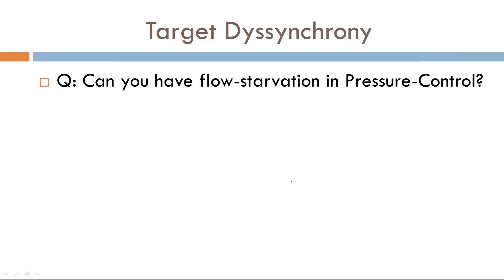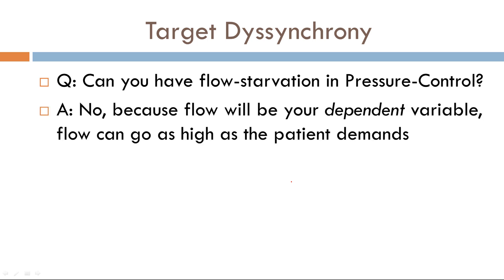Another question: can you have flow starvation in pressure control? The answer is no, because flow will be your dependent variable and can go as high as the patient demands. That's it for target dyssynchrony — join me in the next video where I address cycle dyssynchrony. Thanks a lot.